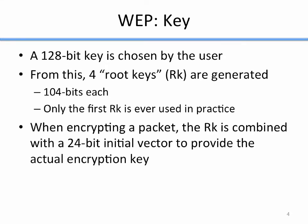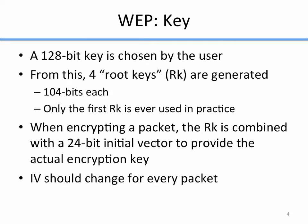When you encrypt a packet in WEP, the root key is combined with a 24-bit initialization vector (IV) to provide the actual encryption key passed to RC4. The IV should change for every packet, because with a stream cipher you never want to reuse the same key — the same key results in the same keystream, and an attacker could potentially exploit that. So the 24-bit IV was added to ensure the key changes for every packet.